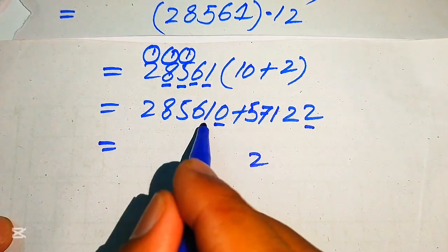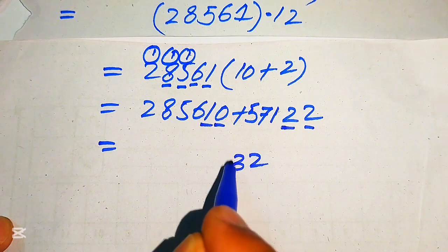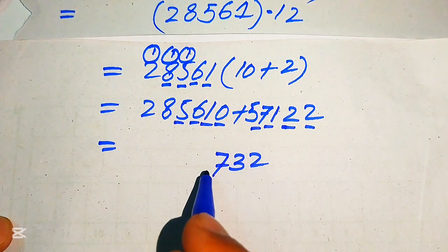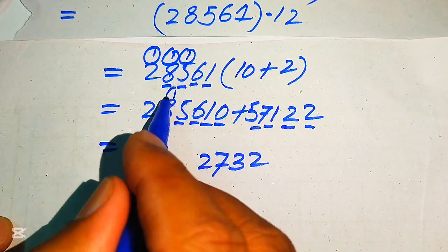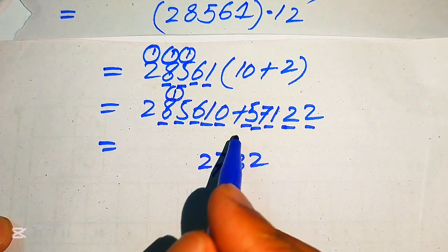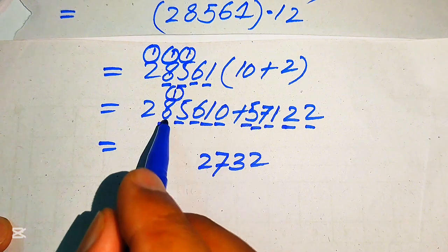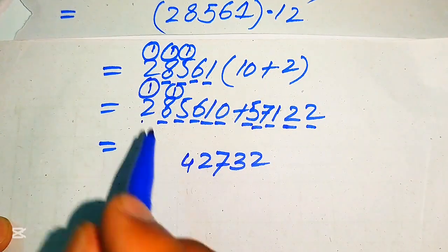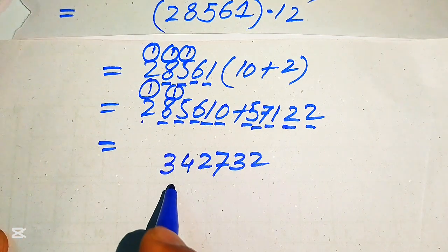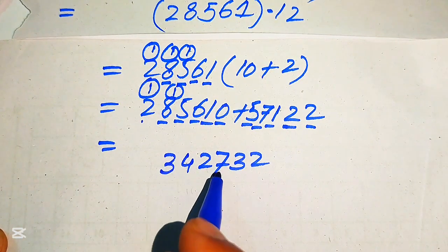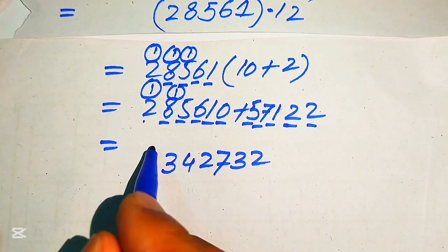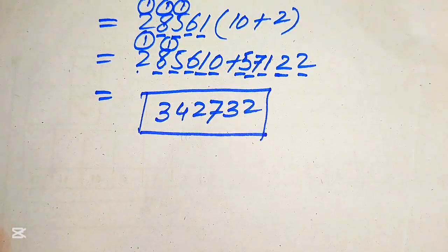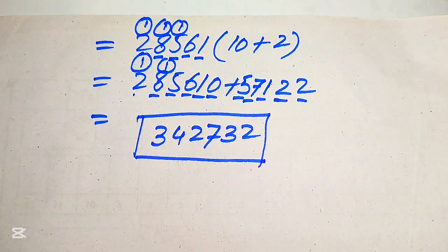Adding 285610 and 57122: 0+2=2; 1+2=3; 6+1=7; 5+7=12 (write 2, carry 1); 8+5+1=14 (write 4, carry 1); 2+1=3. The final answer is 342732. Thank you so much for watching this video — please subscribe to my channel for more exciting videos.